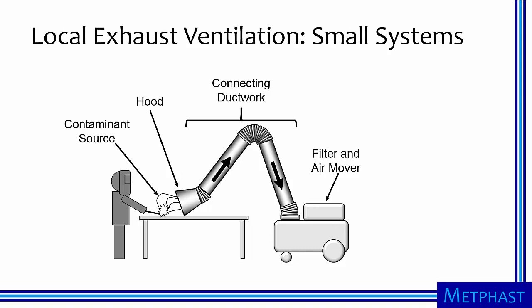Air from a local exhaust ventilation system can be cleaned and then recirculated back into the facility, but this practice should be restricted to contaminants of low toxicity. Air is moved through the system by a large industrial fan. Local exhaust ventilation systems can also be small and self-contained. They have the same components as the larger system: a hood designed to evacuate the contaminant, connecting ductwork to move the contaminant to an air cleaner, and finally the air cleaner and an air mover. In this case, the filter and air mover are contained in a single housing.